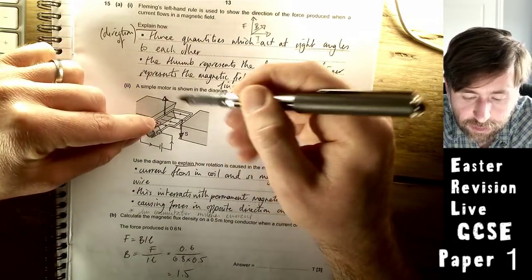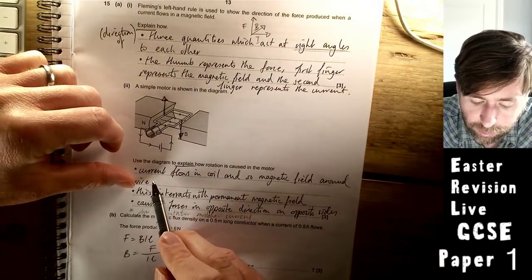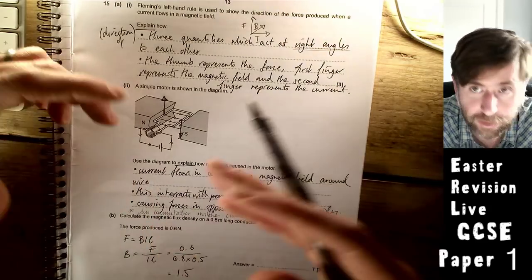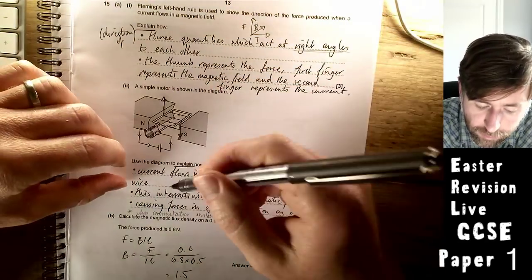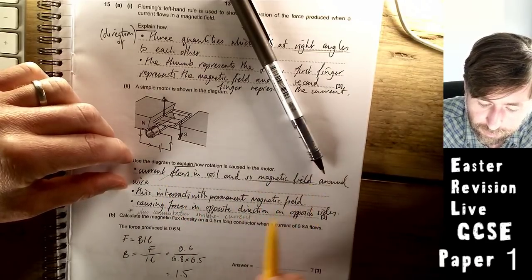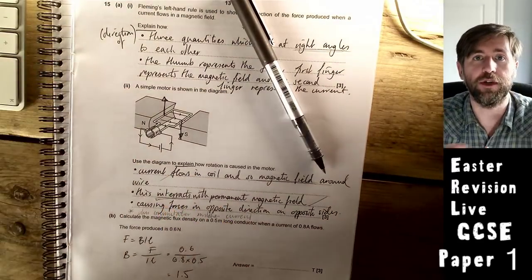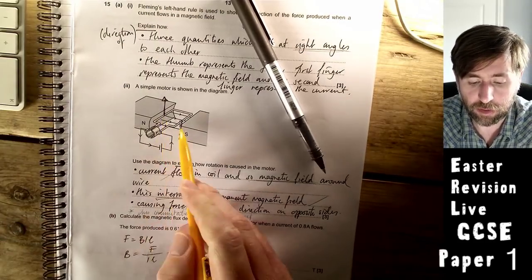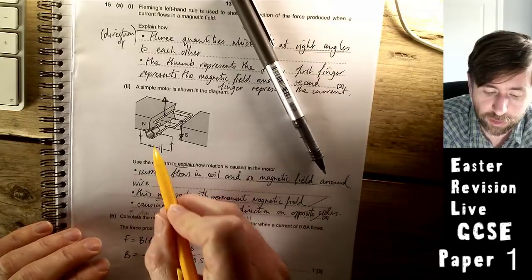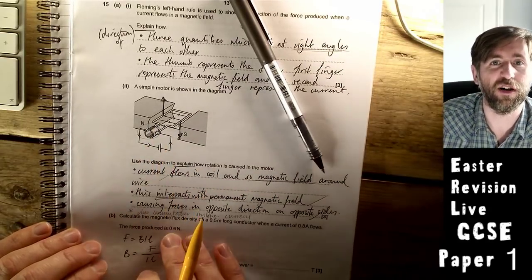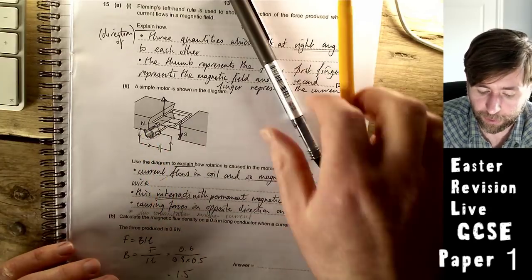Use the diagram to explain how rotation is caused in the motor. Rotation's only going to happen if these two forces are in opposite directions. Current flows in the coil, and so magnetic fields are around the wire. That's the right-hand grip rule. You put a current and you get a magnetic field. This magnetic field interacts with the permanent magnetic field. Two fields overlap and interact, causing forces in opposite directions on the opposite sides of the coil. You could have talked about the commutator switching the connection every half turn of the motor.